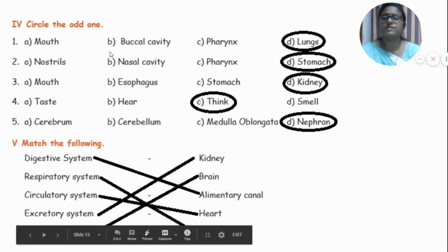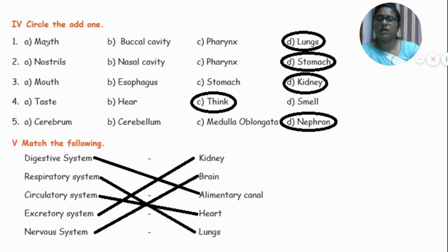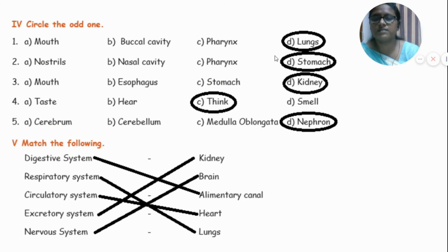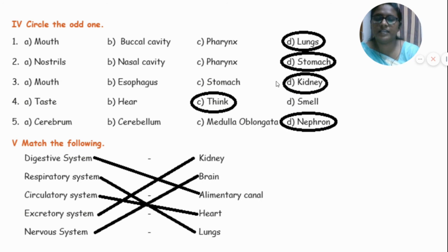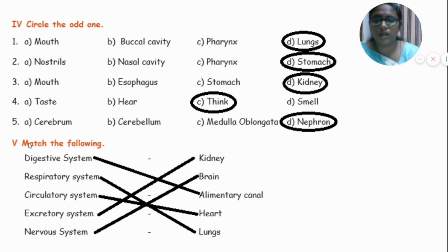Now let's circle the odd one out. Mouth, buccal cavity, pharynx, and lungs — Lungs is the odd one. Nostrils, nasal cavity, pharynx, stomach — Stomach is the odd one. Mouth, esophagus, stomach, kidney — Kidney is the odd one. Taste, ear, think, smell — Think is the odd one. Cerebrum, cerebellum, medulla oblongata, nephron — Nephron is the odd one.